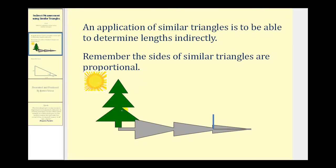So instead of trying to determine the height of this tree by climbing to the top and then somehow trying to drop a tape measure from the top to the bottom, we could use the height and the shadow of a much smaller object to determine the height of the tree.